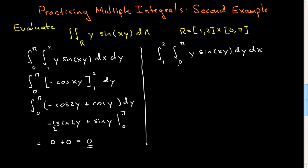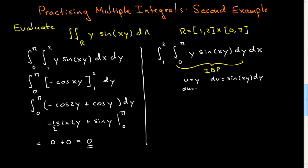Now I have to integrate y·sin(xy) with respect to y. After just a little thought, you'll see this is a question of integration by parts. You'll have to put the outer integral on hold while you work out this inner one. Set u = y and dv = sin(xy) dy. Then du = dy, and v = minus cosine(xy) divided by x — since I'm integrating with respect to y, I pull out a factor of 1/x.